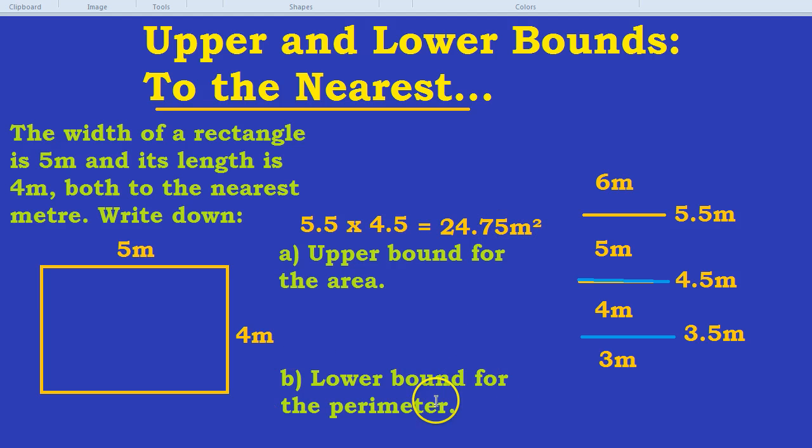Let's find the lower bound for the perimeter. What's the lower bound for 5 metres? The lower bound for 5 metres is 4.5 metres. What's the lower bound for 4 metres? As we saw here, the floor for 4 metres is 3.5 metres. What is the perimeter again, though? What does perimeter mean? Perimeter means all the way around the sides.